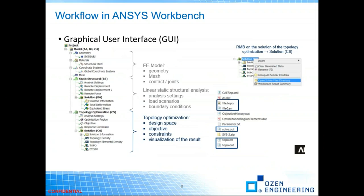This is the typical Workbench flow. You start with your model, do static structure analysis, solve your loads and boundary conditions, then connect it to topology optimization. The three tabs that are automatically inserted and that you need to define are: optimization region, objective, and response constraint.